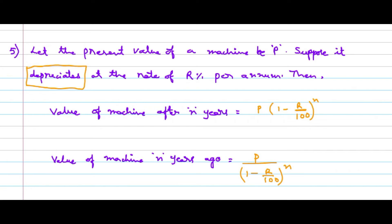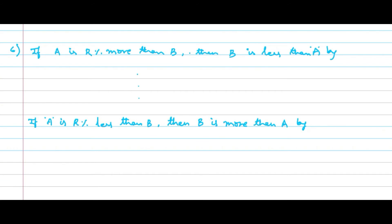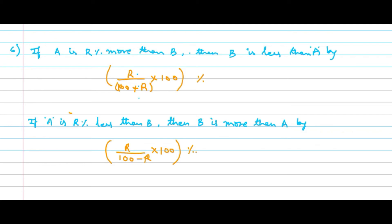This is the last formula. If A is R percent more than B, then B is less than A by R divided by (100 + R) into 100 percent. Similarly, if A is R percent less than B, then B is more than A by R divided by (100 − R) into 100 percent. So these are the formulae used for calculating percentage type of problems, and I can convert them into three types of problems.